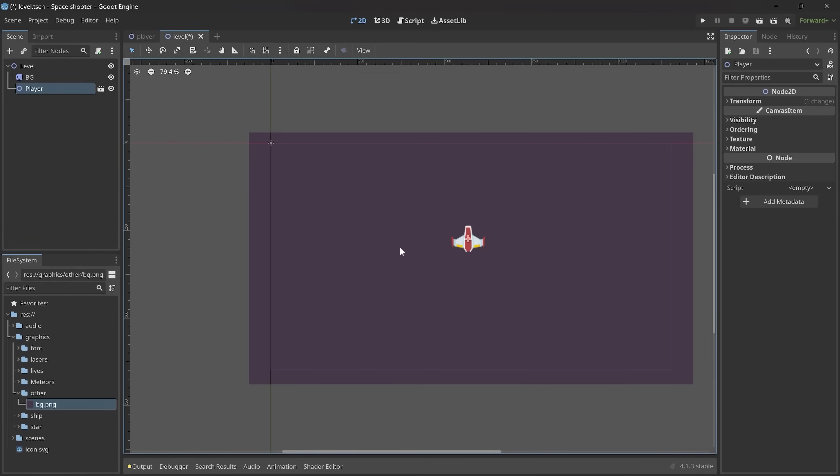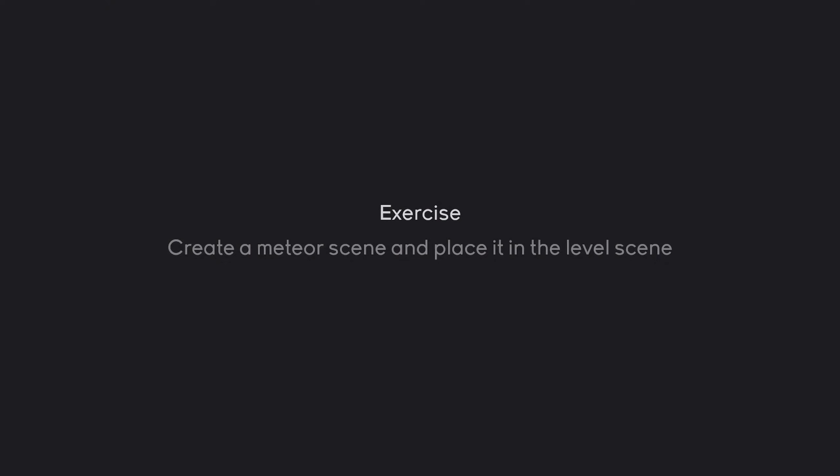Let's do an exercise to make sure you've understood. I want you to create a meteor scene and place it anywhere inside of the level scene. The graphics for the meteor you can find in the graphics folder — there are quite a few textures, just select one of them, it doesn't really matter. Pause the video now and see how far you get.